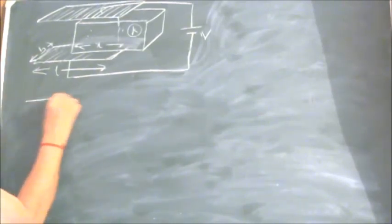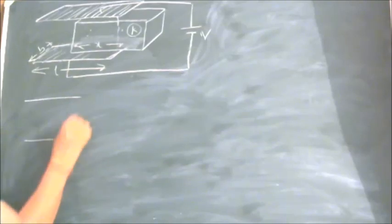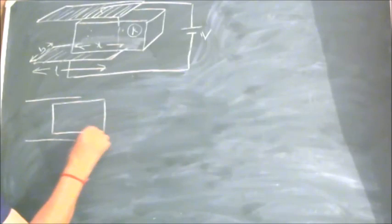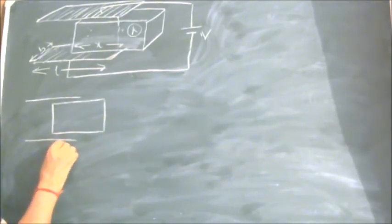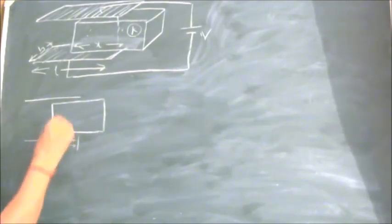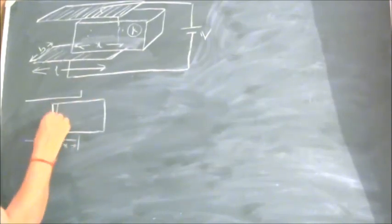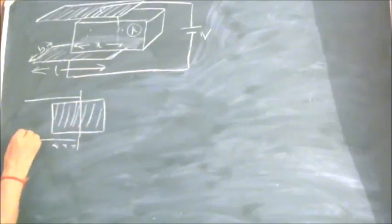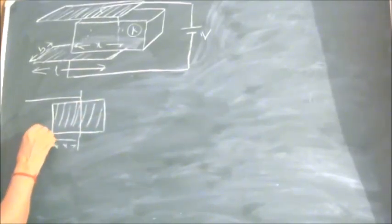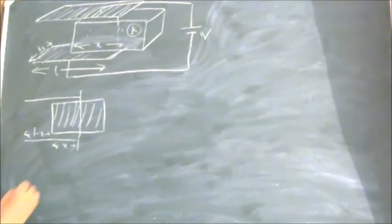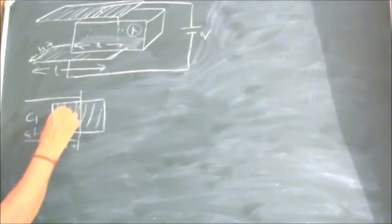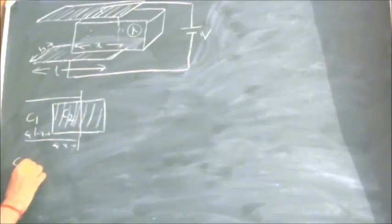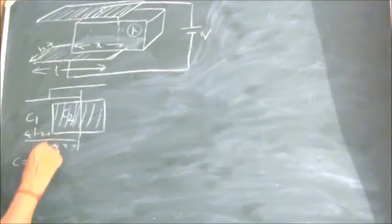If we draw a two-dimensional diagram, at any instant, let the dielectric be at a distance X from this edge — so it has come X inside the capacitor, and this remaining part will be L minus X. If this capacitance is C1 and the capacitance of this part is C2, the resultant capacitor will have these two acting as parallel capacitors.